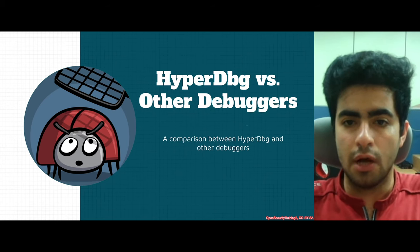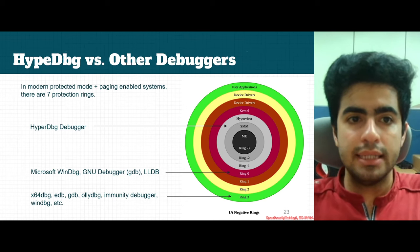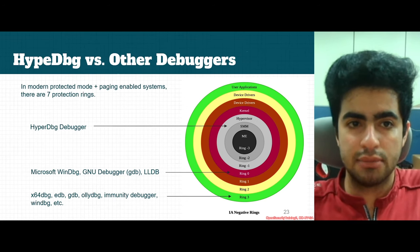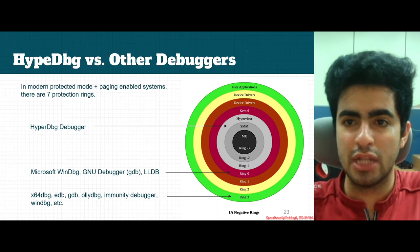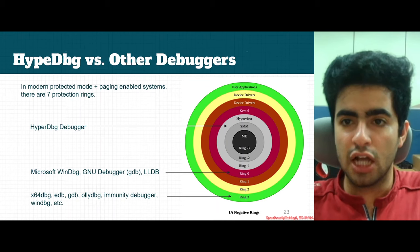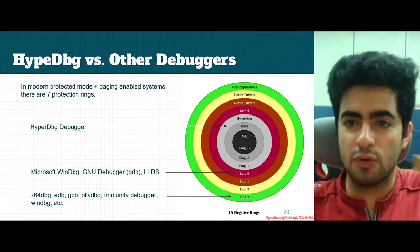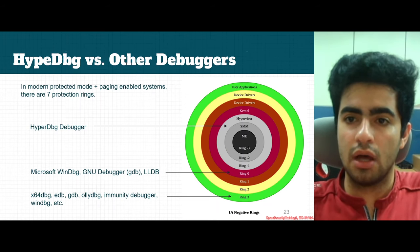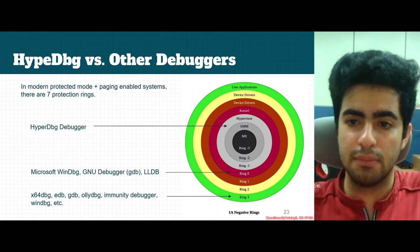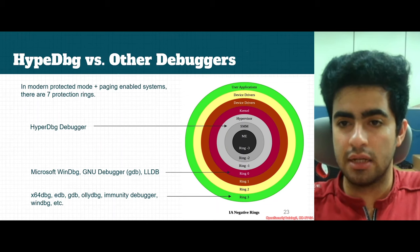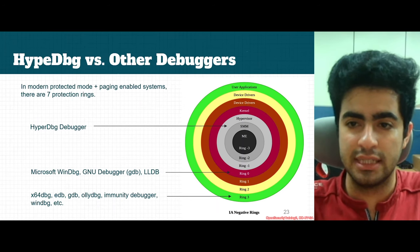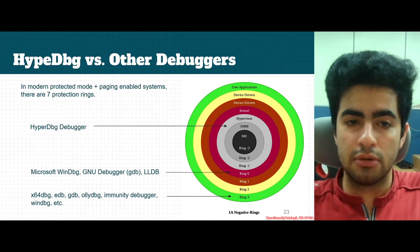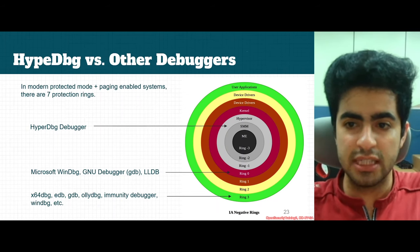Now let's compare HyperDBG with other debuggers. In modern protected mode plus paging-enabled systems, there are seven protection rings in Intel processors. Ring 3 is for user-mode applications. Rings 2 and 1 were previously designed for device drivers but are not used today. Ring 0 is kernel mode where the operating system runs. Ring minus 1 is for hypervisors. Ring minus 2 is for System Management Mode (SMM), and ring minus 3 is for Intel Management Engine. HyperDBG runs at the hypervisor level, or ring minus 1.